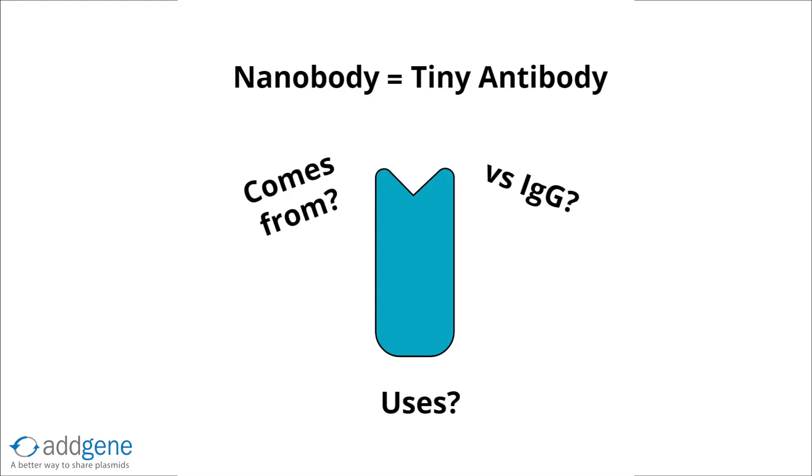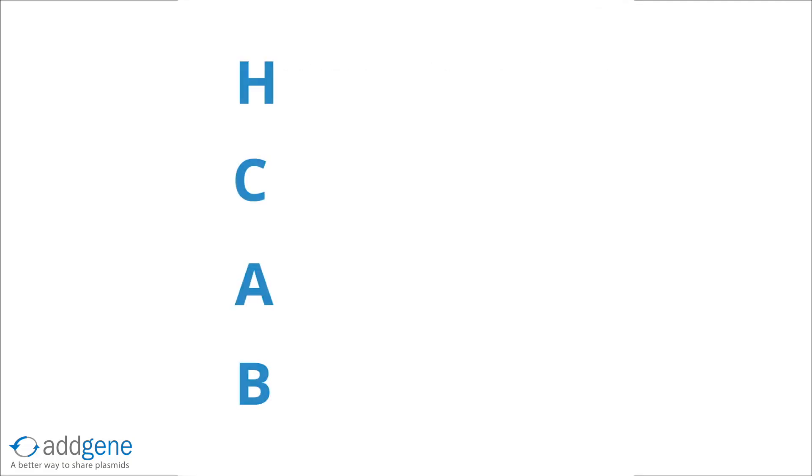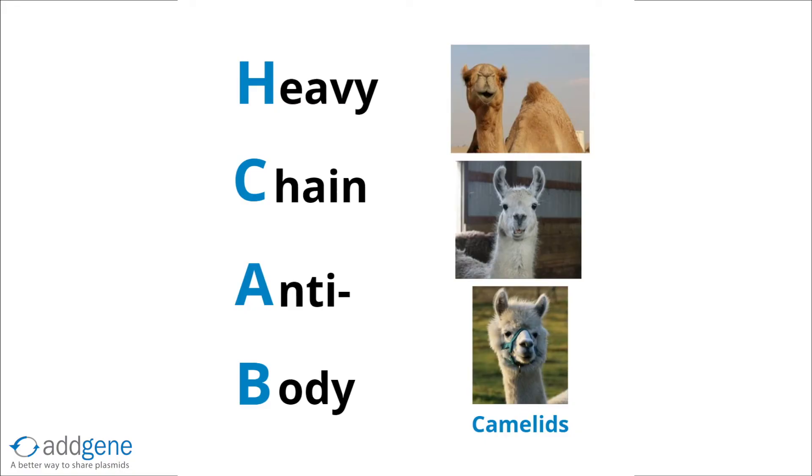We're going to help you understand. It all starts with an HCAB, or heavy chain antibody. Nanobodies are derived from this special type of antibody. HCABs are found in camels, llamas, alpacas, and other camelids.